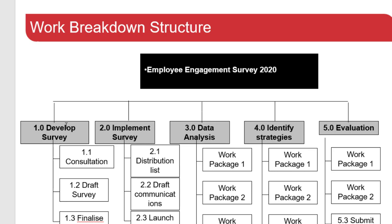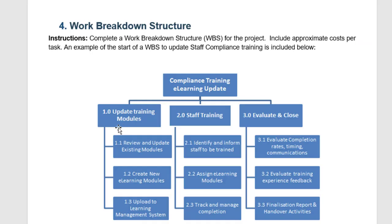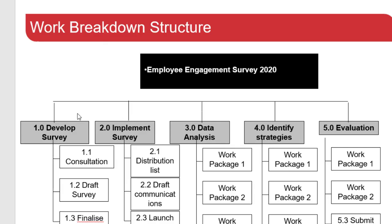Going back to the process style, we really can't implement the survey until we've developed it, and we can't analyse the data until we've implemented the survey. We can't identify strategies until we see what the data tells us, and we certainly can't evaluate everything if we haven't done it already. So this is a process style. In contrast, a product style — if this were a house renovation — might have products like bathroom, kitchen, dining room. A process style renovation might be: planning, deconstructing, constructing, and evaluating and closing.